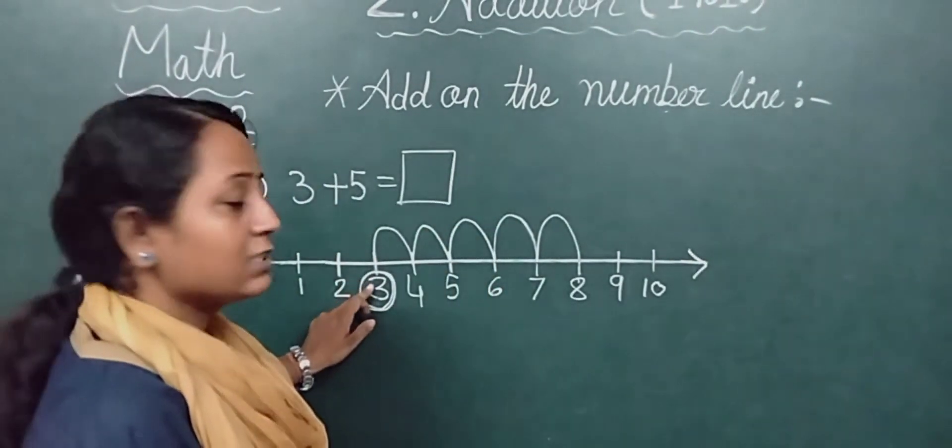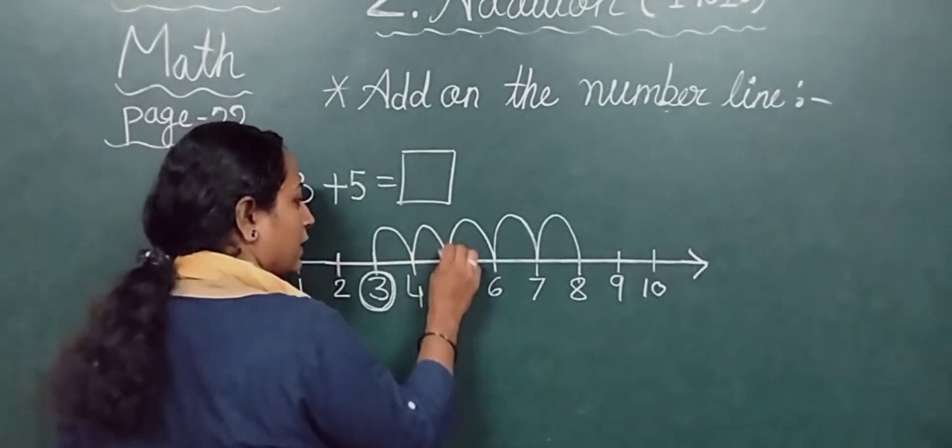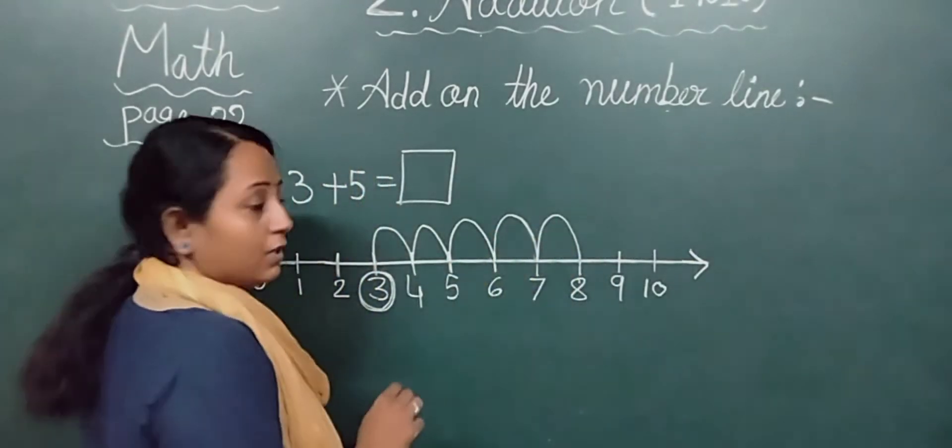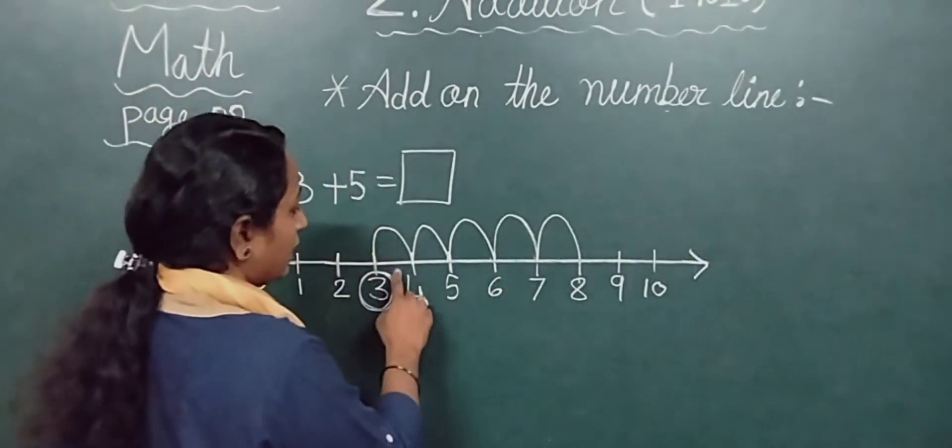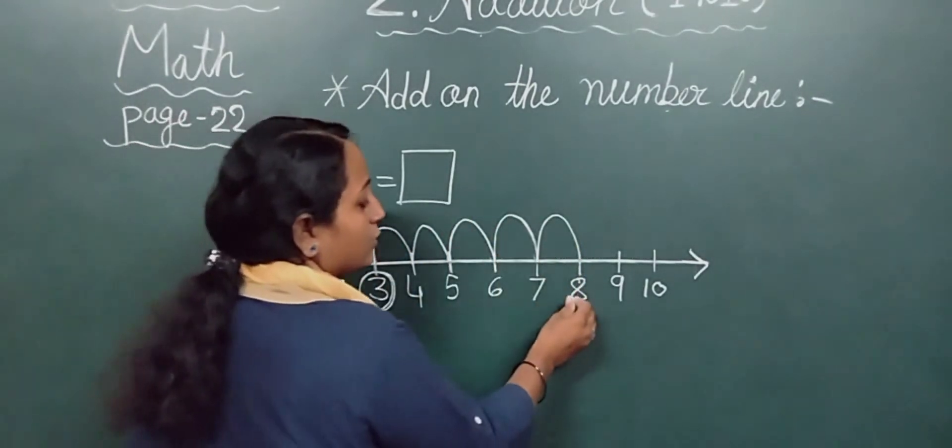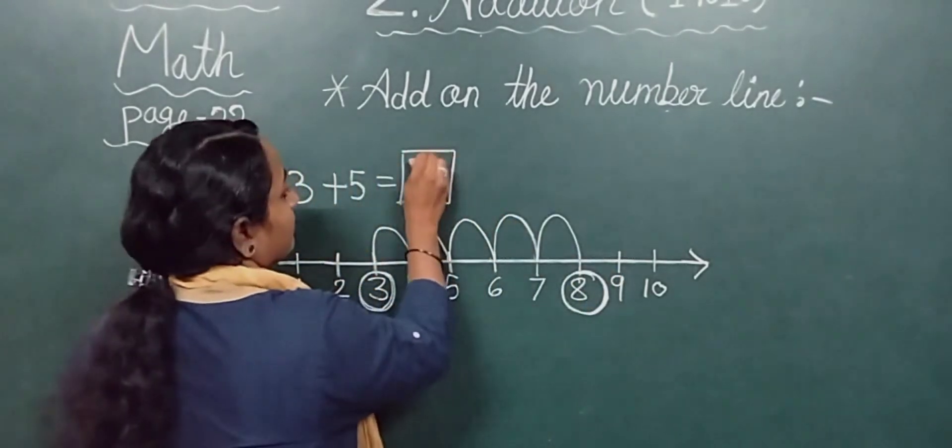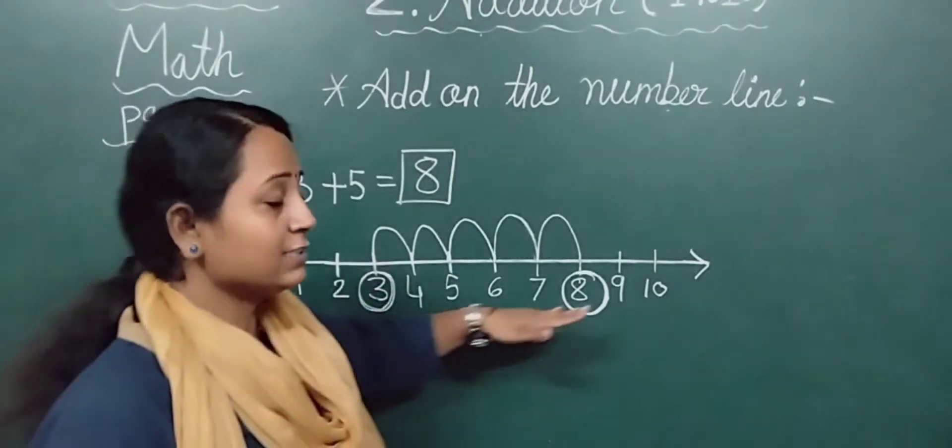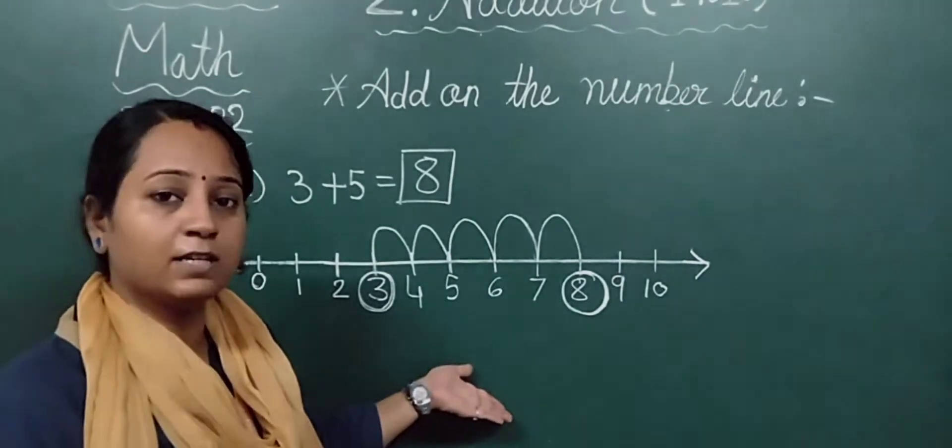From 3: 4, 5, 6, 7, 8. Since it's 5 times, we made 5 jumps here. That means above the numbers, you have to make bridges like this. You have to make bridges like this. So what answer did we get? Answer is 8. What answer did we get? In this way you have to do addition on the number line. In this way you have to do this exercise.